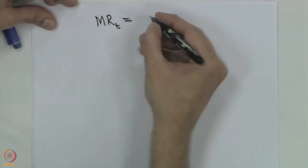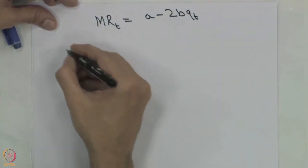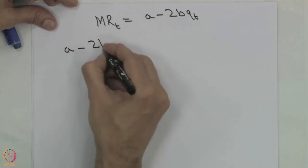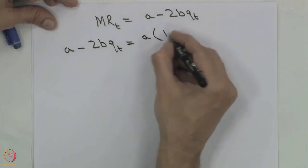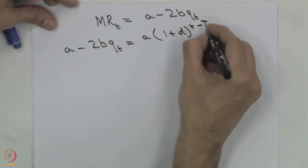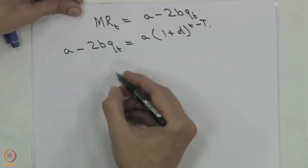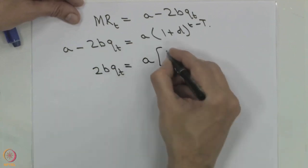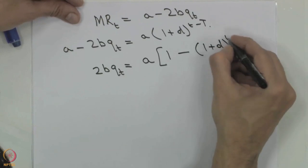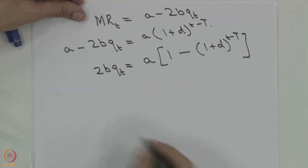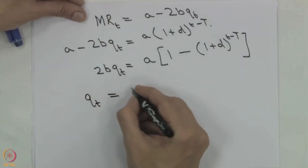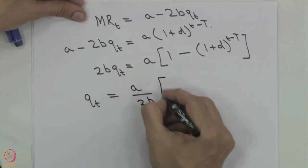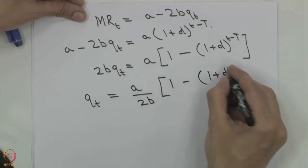We already derived that the marginal revenue for the linear inverse demand curve is A minus 2B·Q_T. Equating these two expressions: A minus 2B·Q_T equals A times (1+D) raised to (T minus capital T). Rearranging, 2B·Q_T equals A times [1 minus (1+D) raised to (T minus capital T)], so Q_T equals A over 2B times [1 minus (1+D) raised to (T minus capital T)].